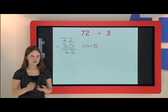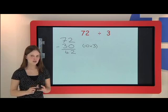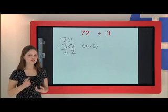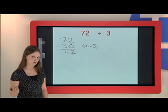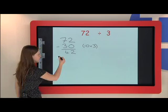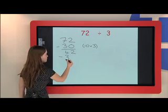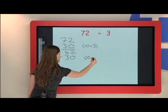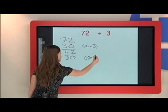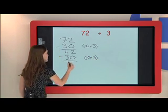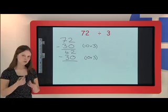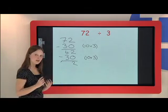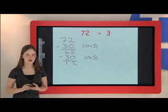Now I think again, what's the biggest and easiest number in the 3 times table that I can take away from 42? I know I can try 10 times 3 again. So I take away 30 and write next to the side 10 times 3. Then I do this subtraction. 2 minus 0 is 2, and 4 minus 3 is 1. So I'm left with 12.